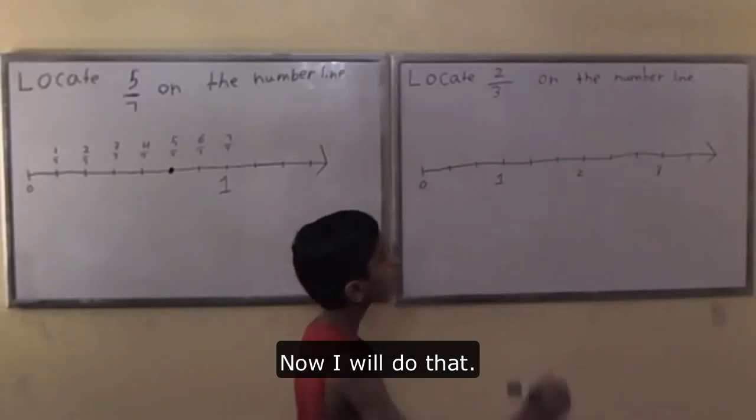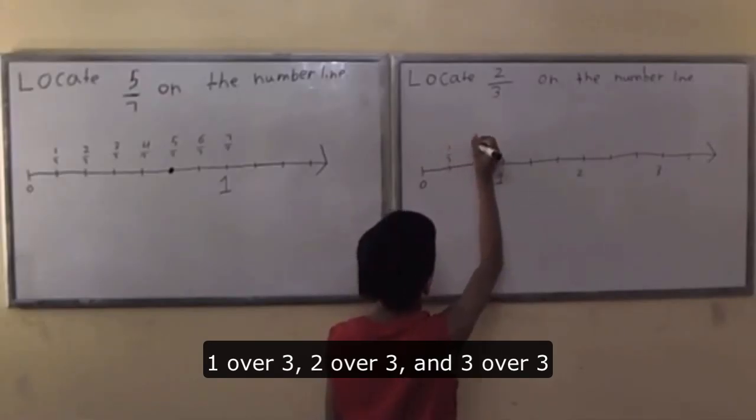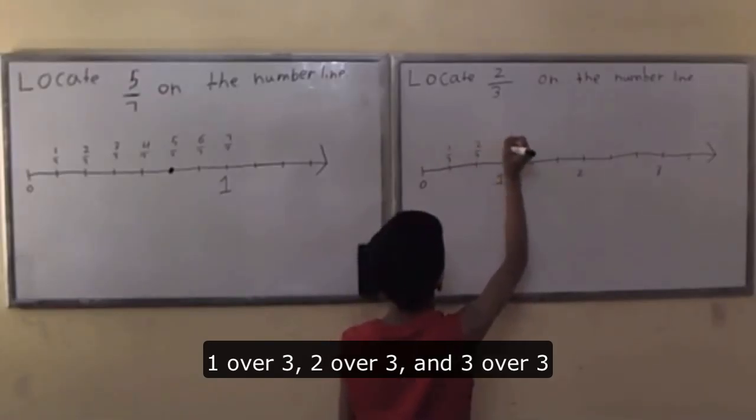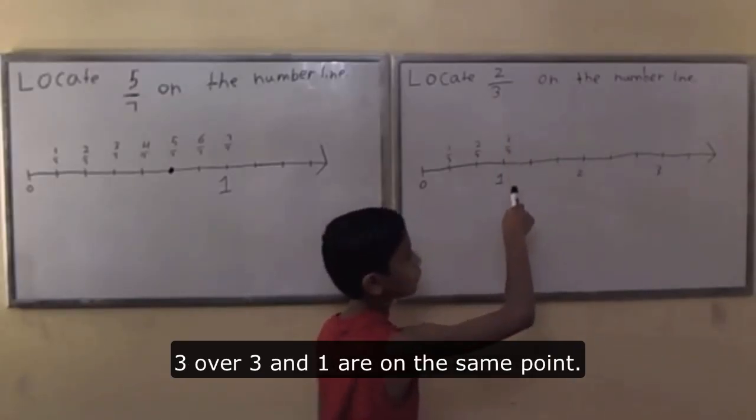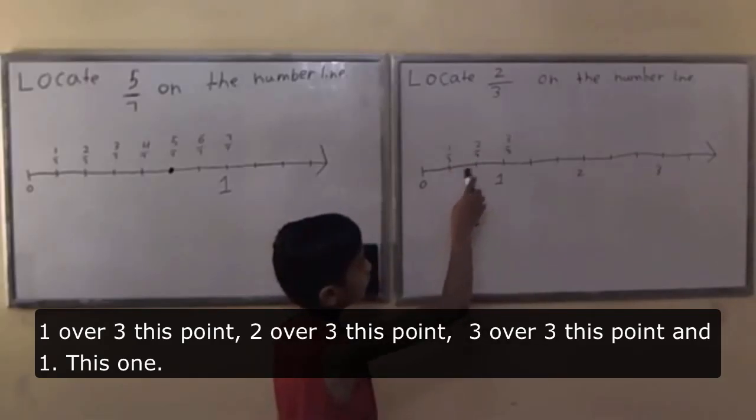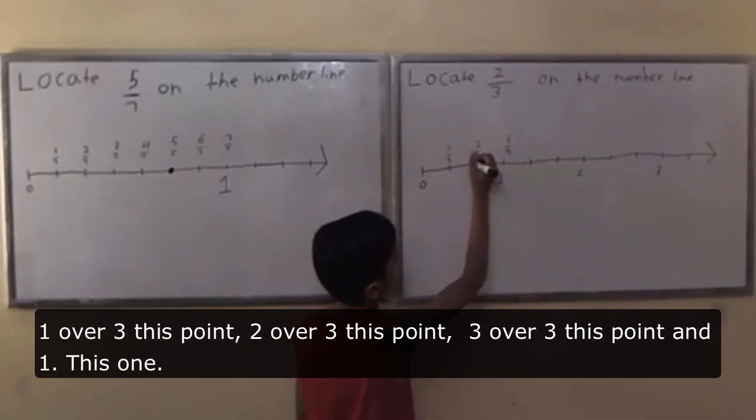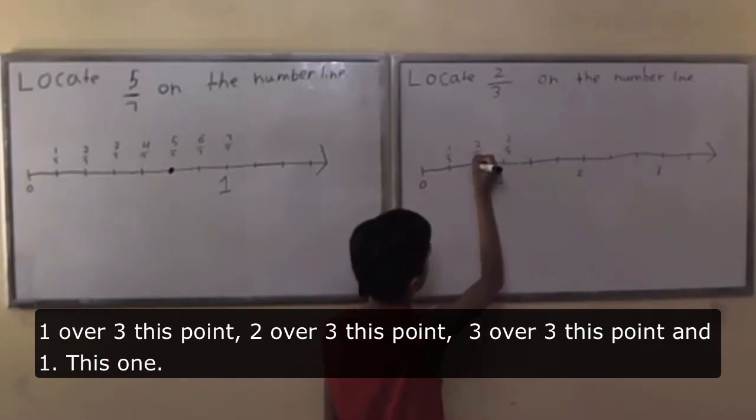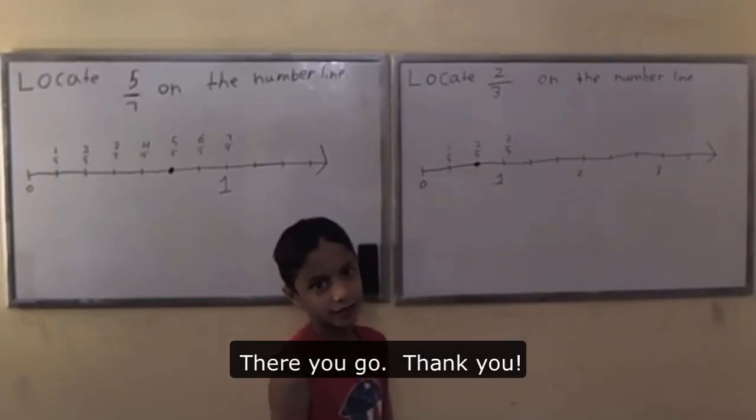Now watch. I will do that: 1/3, 2/3, and 3/3. 3/3 and 1 are on the same point. 1/3 this point, 2/3 this point, 3/3 this point, and 1. This one. There you go. Thank you.